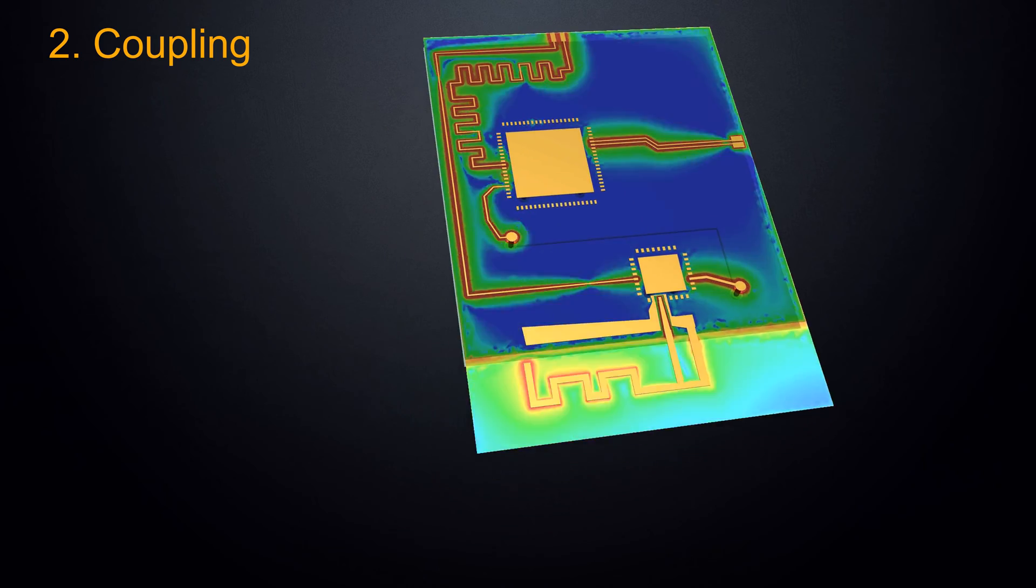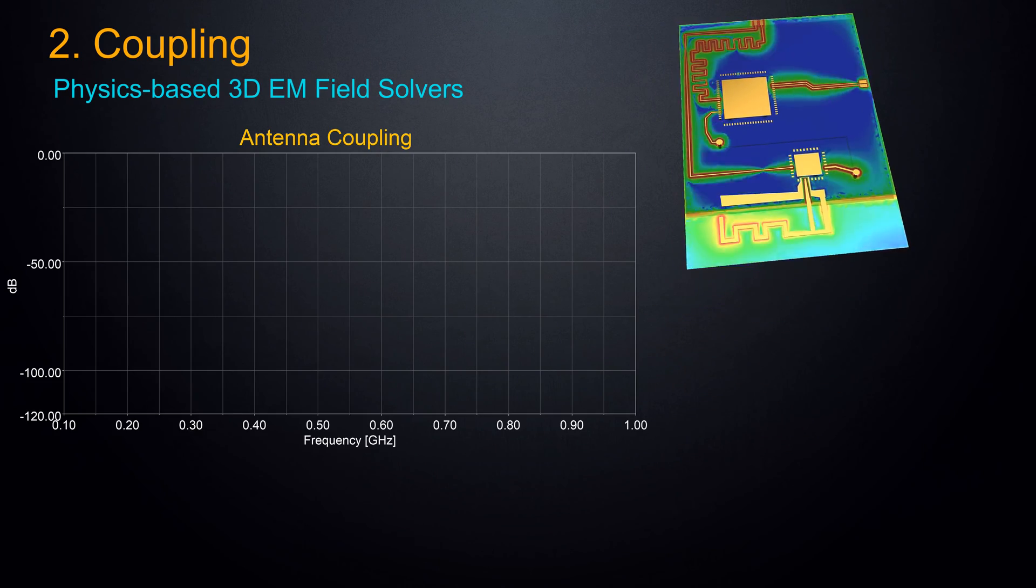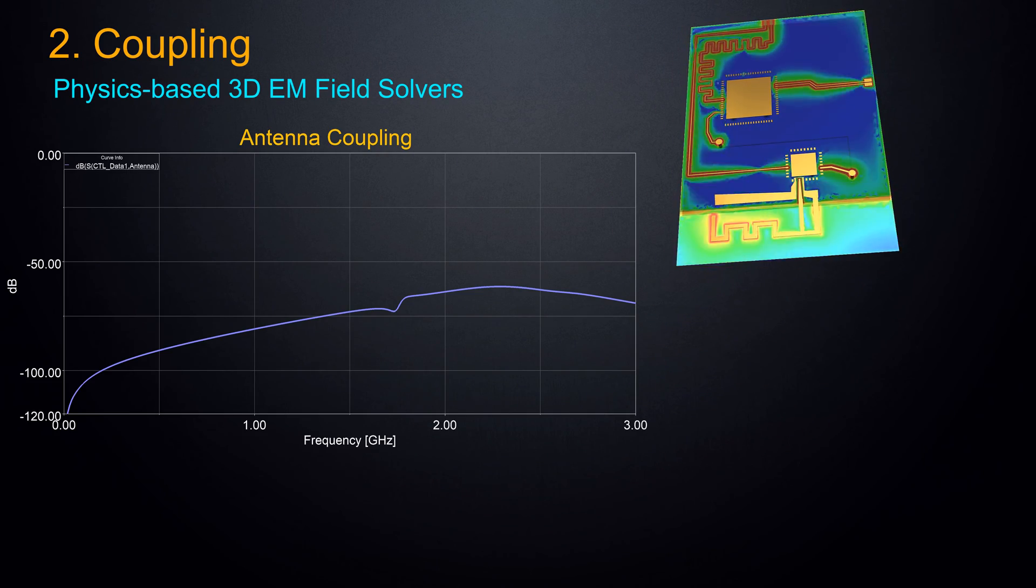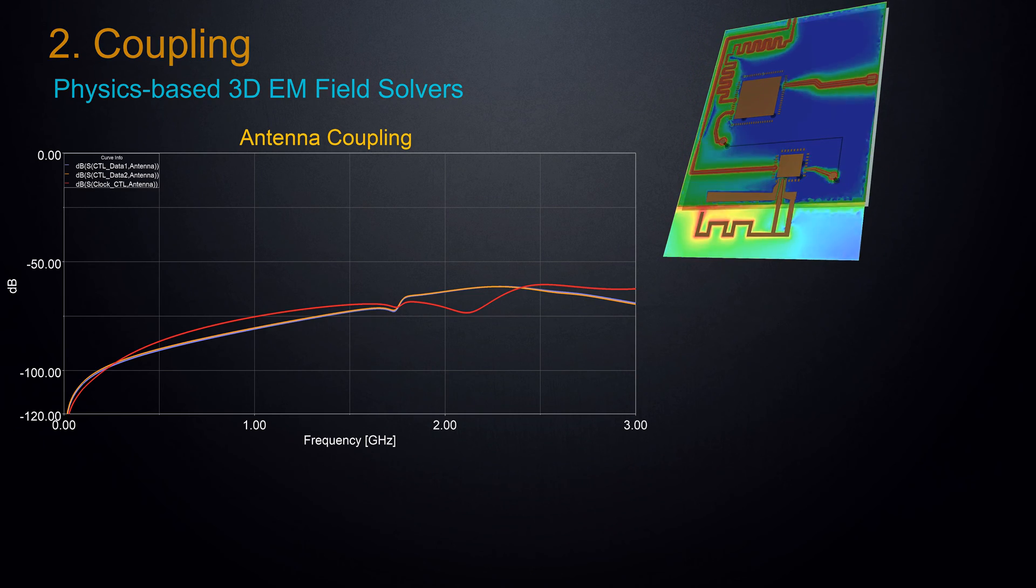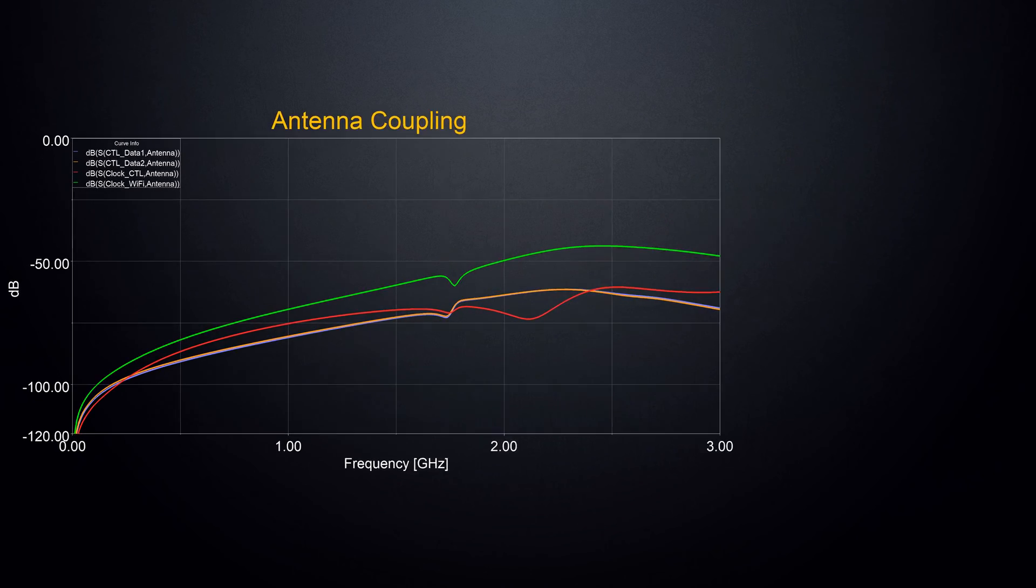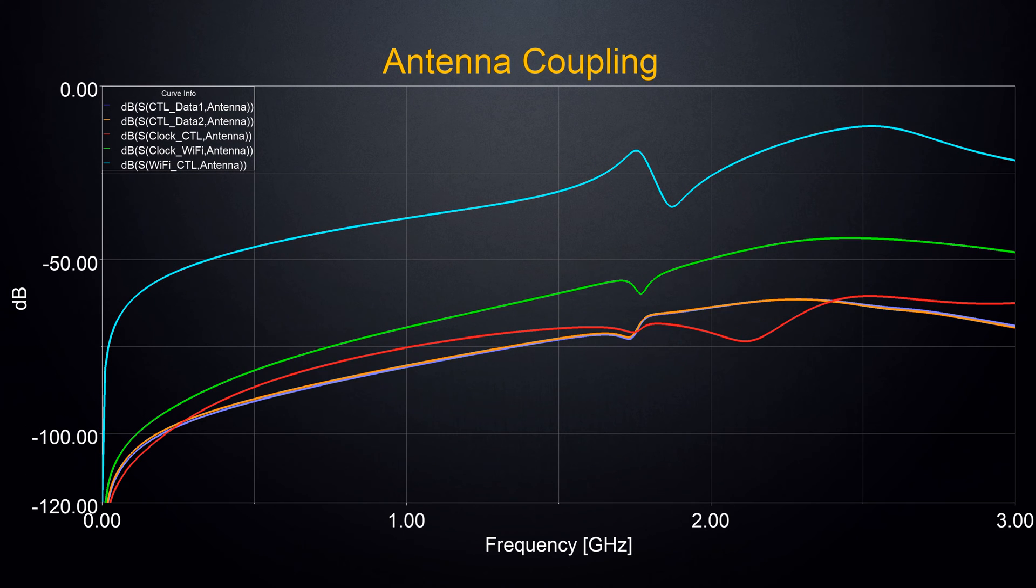Once we know the spectra of the interfering signals, we assess how they couple to the various radios using physics-based 3D electromagnetic field solvers in ANSYS HFSS. This is done by extracting the S-parameters, which characterizes the interfering power as it couples to the receive antenna. In this approach, any number of aggressors regardless of type may be considered as potential interference sources to any number of receivers on the device.